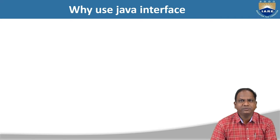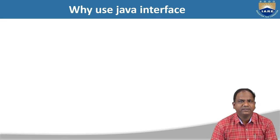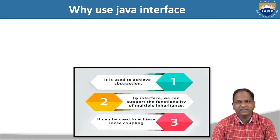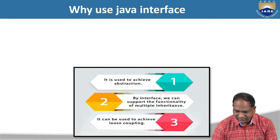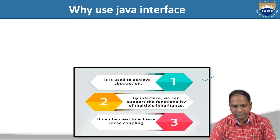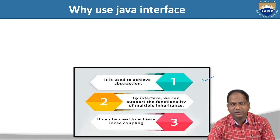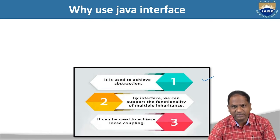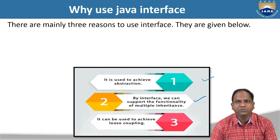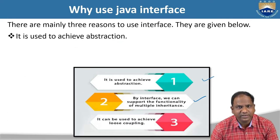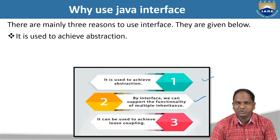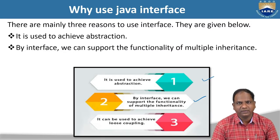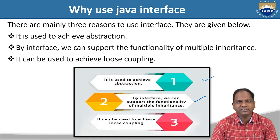Why use Java interfaces? There are three main reasons: first, if you want to achieve abstraction — hiding internal details; second, to achieve multiple inheritance, supporting functionality that Java does not support directly with classes; and third, it can be used to achieve loose coupling.